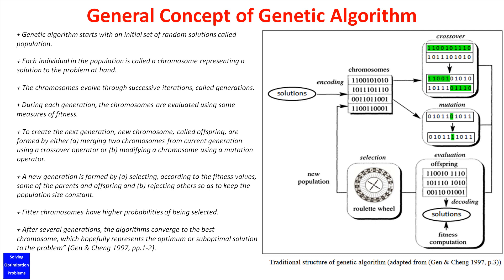During each generation, the chromosomes are evaluated using some measures of fitness. To create the next generation, new chromosomes called offspring are formed by either: (a) merging two chromosomes from the current generation using a crossover operator, or (b) modifying a chromosome using a mutation operator.